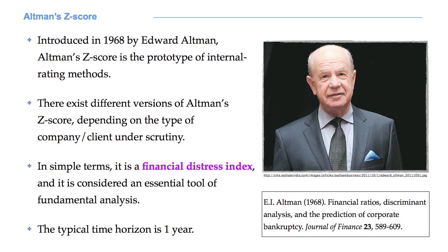These versions include large companies, small companies, manufacturing companies, and so on. The typical time horizon is 1 year. This means that the Z-score gives us information about the possibility that our counterparty will go bankrupt within 1 year.